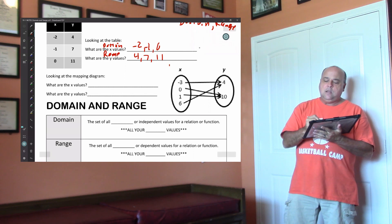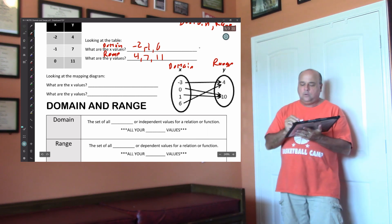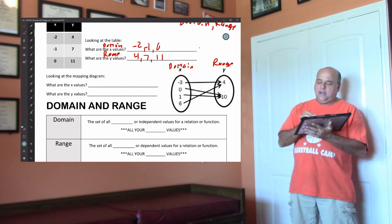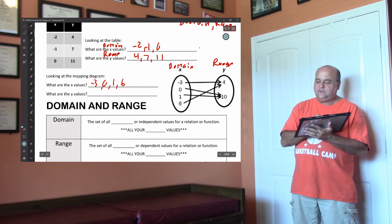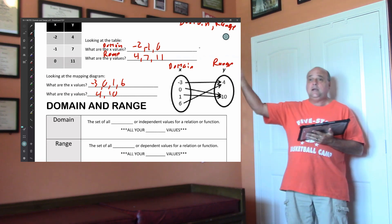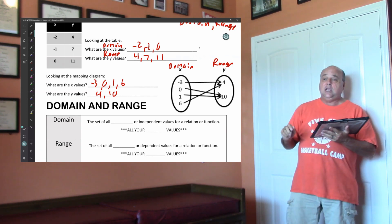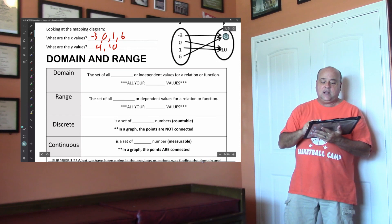Look at the mapping. The x is your domain, the range is your y. Remember, it's always alphabetical. My domain values would be negative 3, 0, 1, and 6, and my range values would just be 4 and 10. This also would be a function because each domain gets a unique answer — the x's are not repeating.